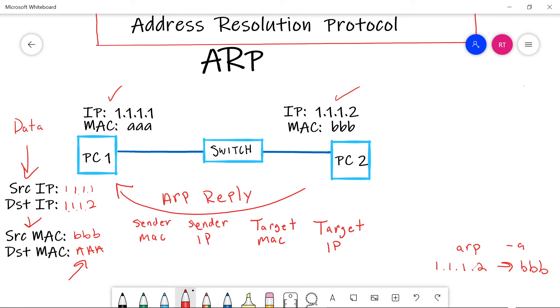Now we still have these four fields inside the ARP reply, but some of the values change. The sender MAC address is going to be the MAC address of PC two, which is all B's. The sender IP is going to be the IP of PC two, which is 1.1.1.2. The target MAC address, remember this one was all zeros inside of the ARP request. It's not all zeros anymore. The target MAC address is going to be the MAC address of PC one. So all A's. The target IP is going to be the IP of PC one, 1.1.1.1.